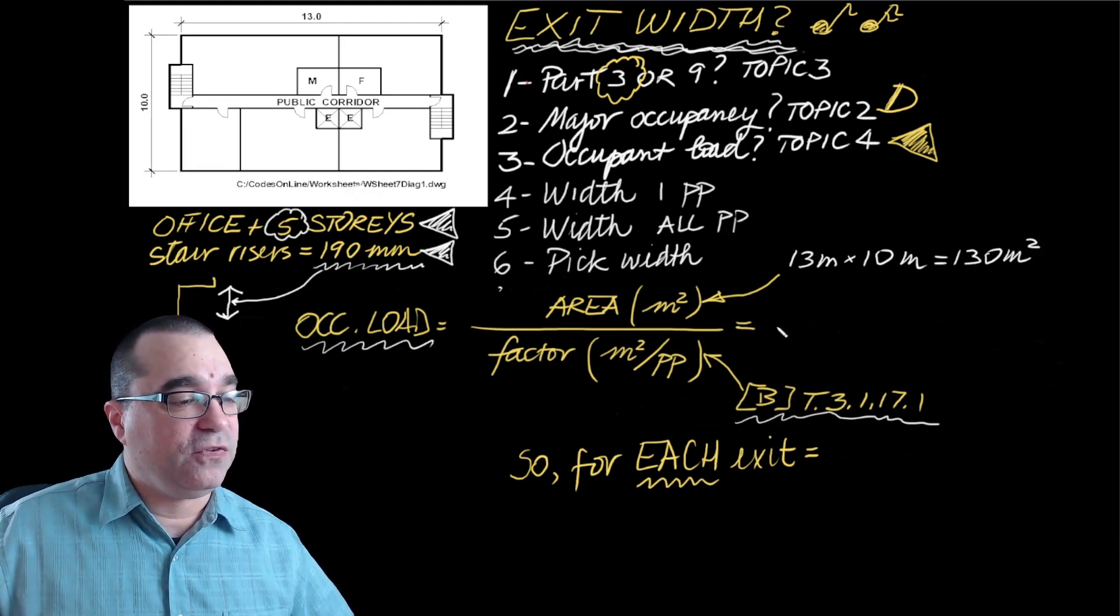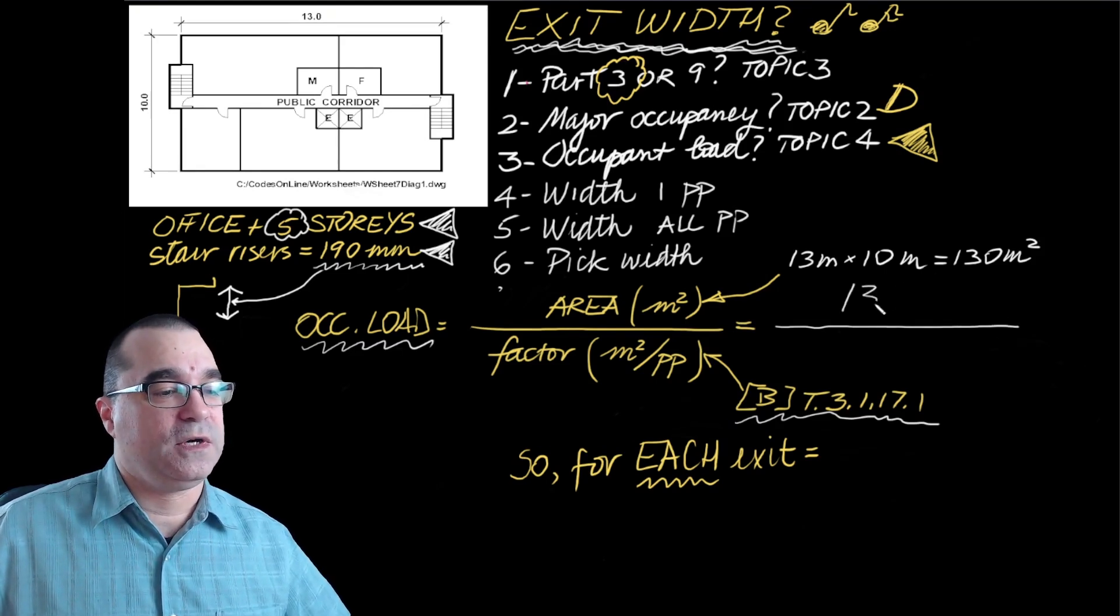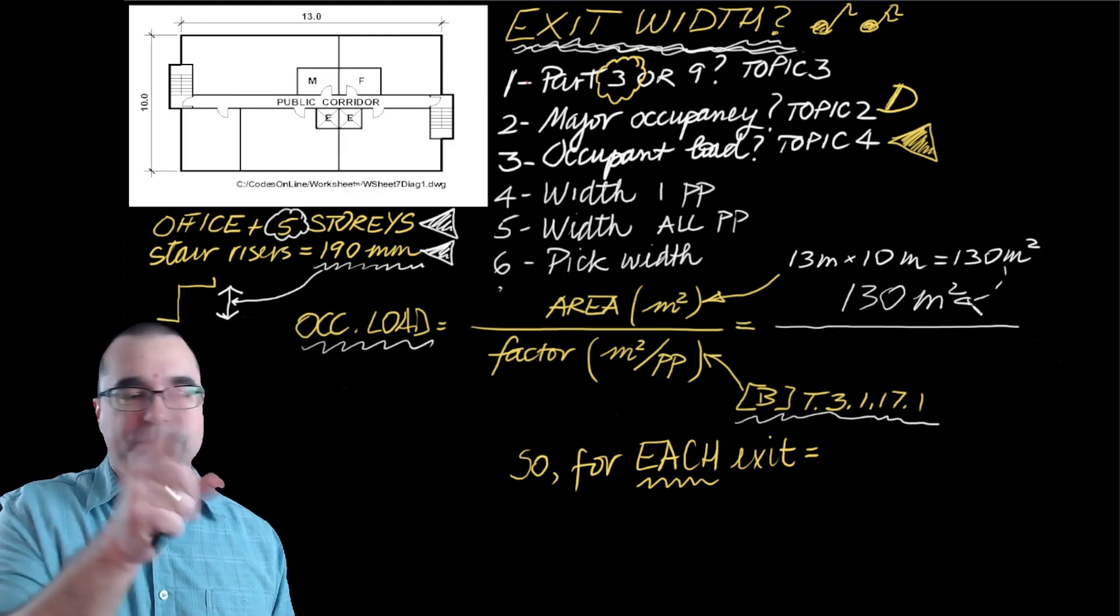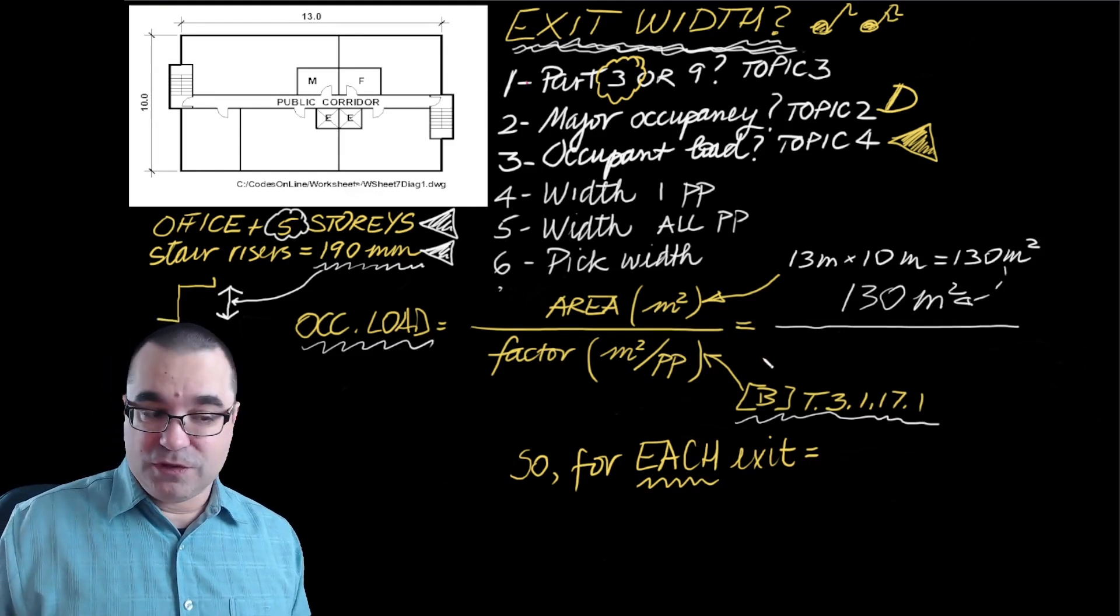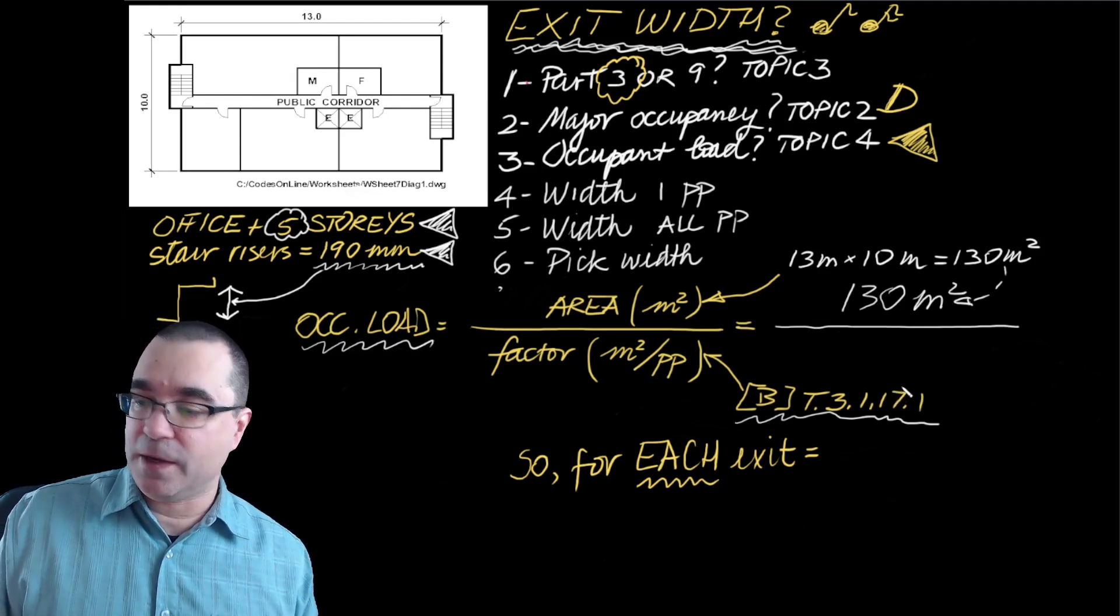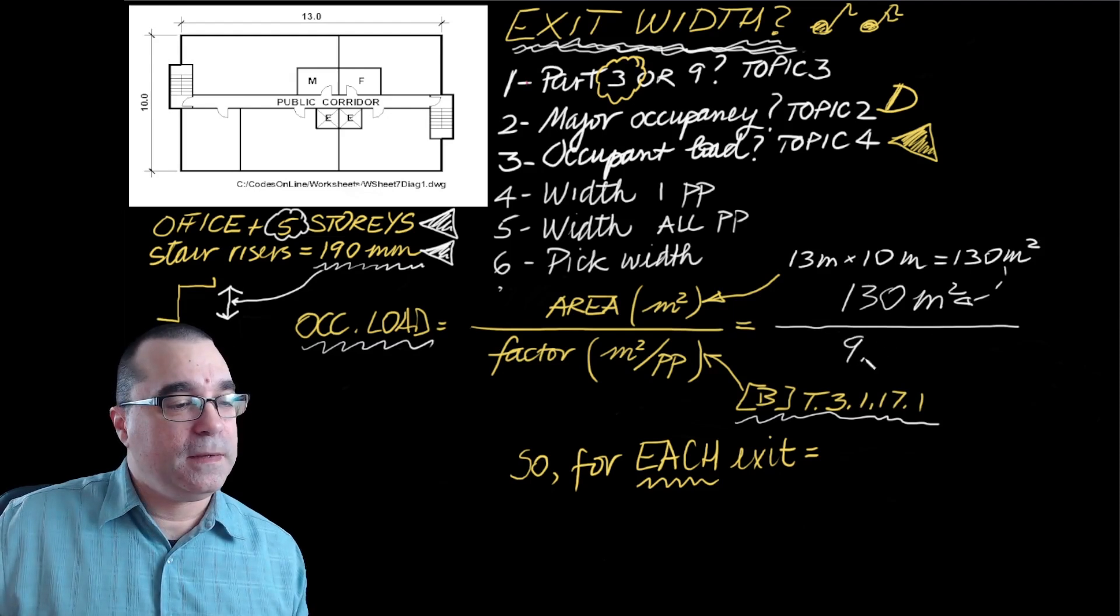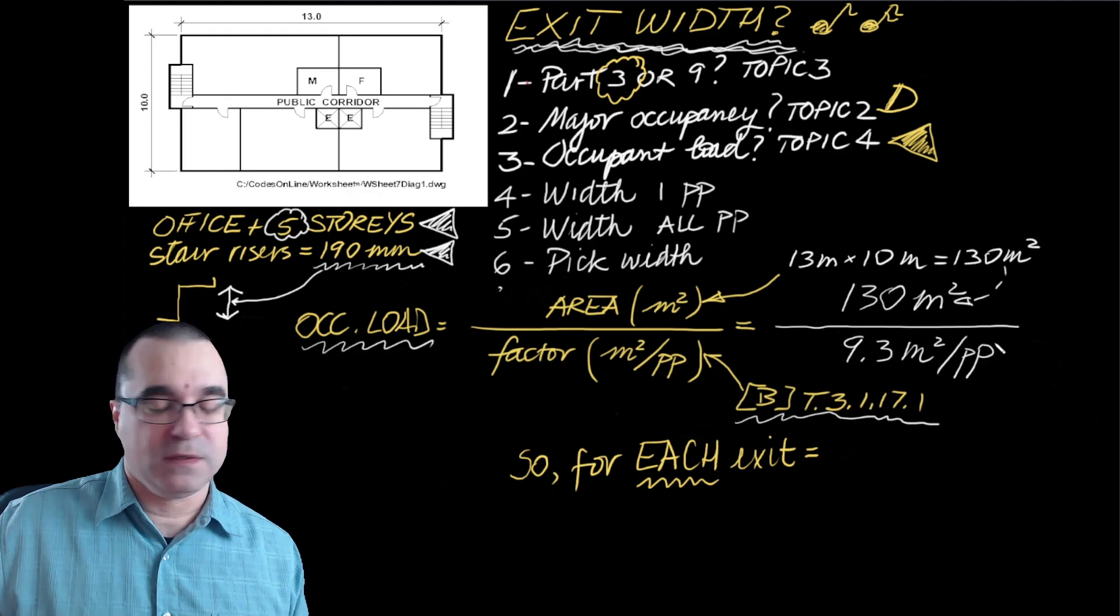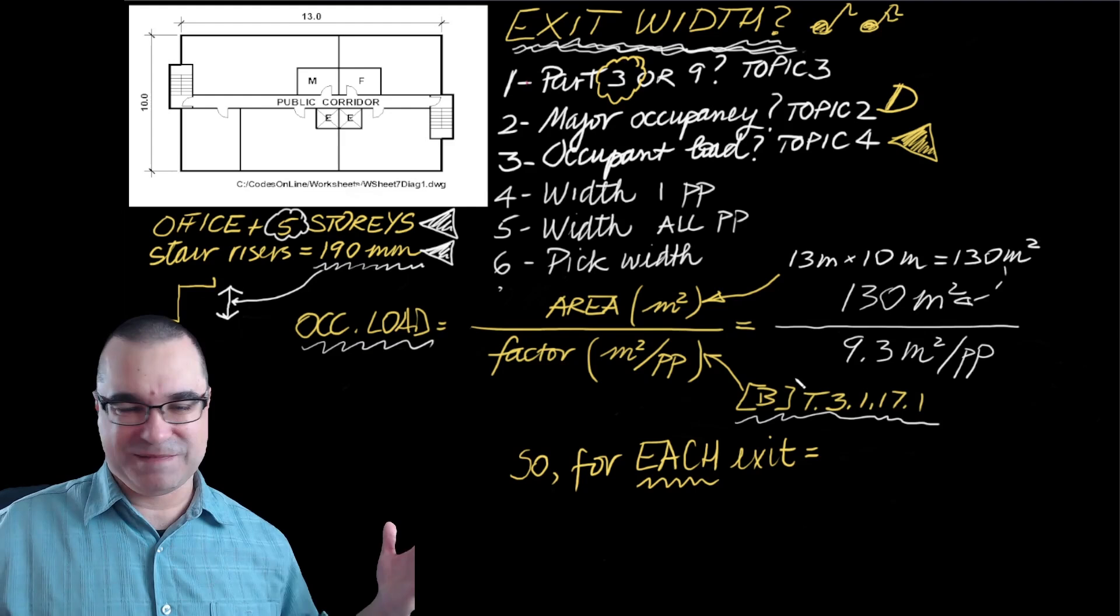The area of the floor is 130 meters squared. I just got it by multiplying the length and the width of the floor, 10 meters by 13 meters. And the factor from Table 3.1.17.1 for this space is 9.3 meters squared per person.